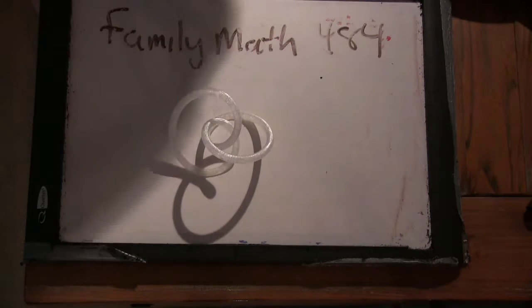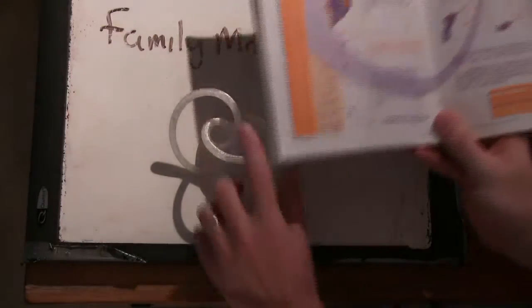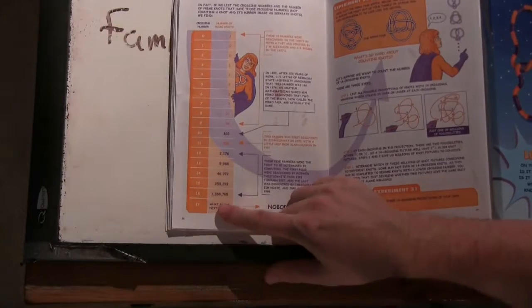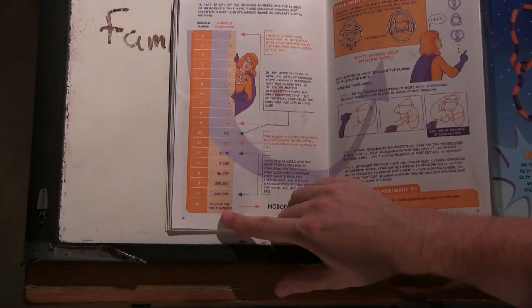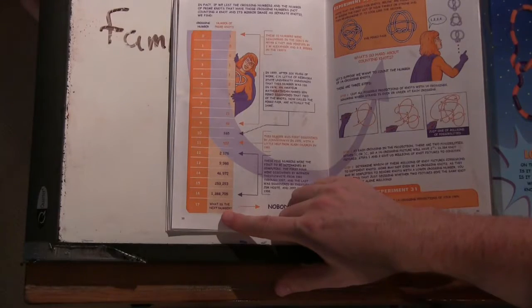And then it says there's only one with four between... Yeah. Well, the neat thing about this is it lists all the ones up to 17 crossings. But nobody knows what 17 is.